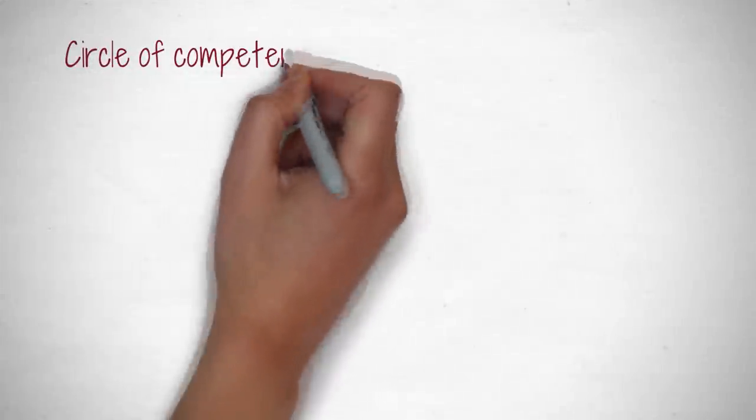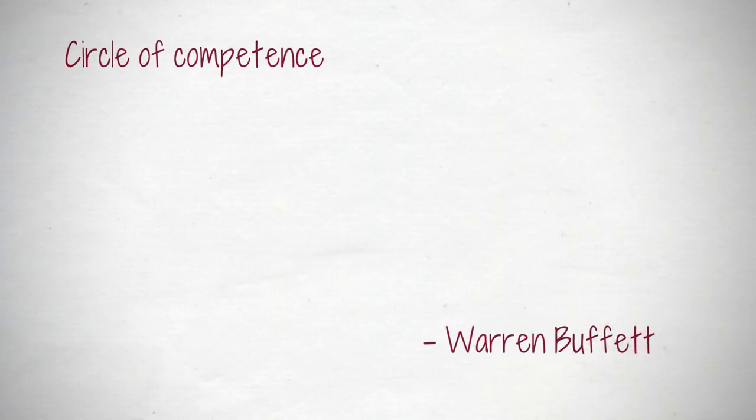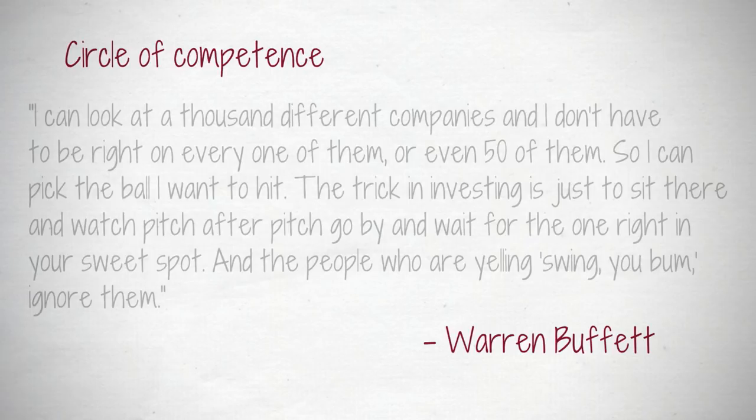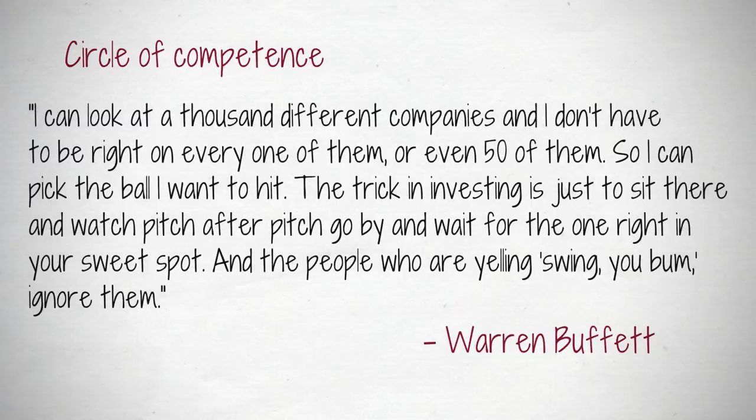One of Warren Buffett's most popular mental models is the circle of competence. In a 2017 documentary, he described it as follows. I can look at a thousand different companies, and I don't have to be right on every one of them, or even 50 of them, so I can pick the ball I want to hit. The trick in investing is just to sit there and watch pitch after pitch go by and wait for the right one in your sweet spot. And the people who are yelling, SWING! YOU BUM! Ignore them.